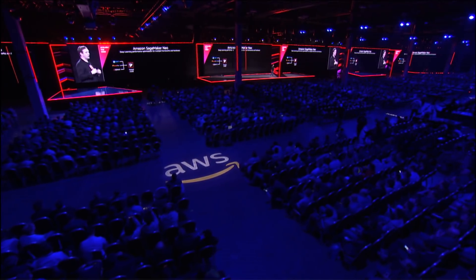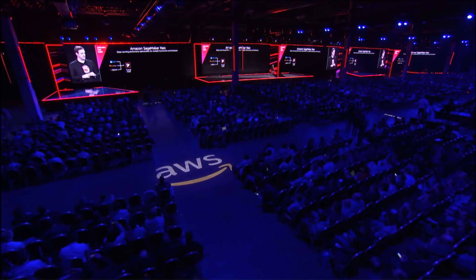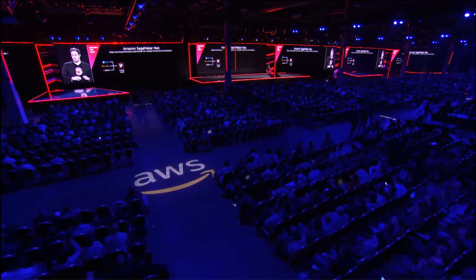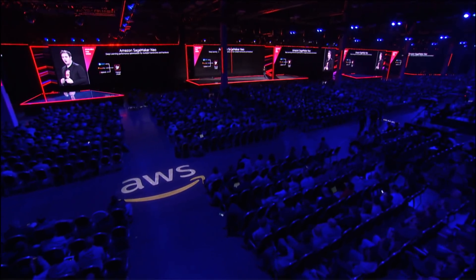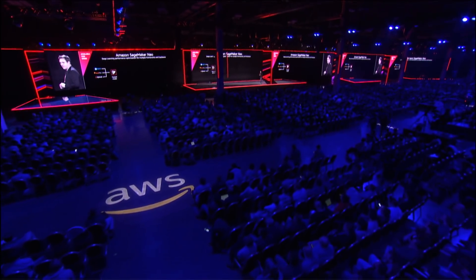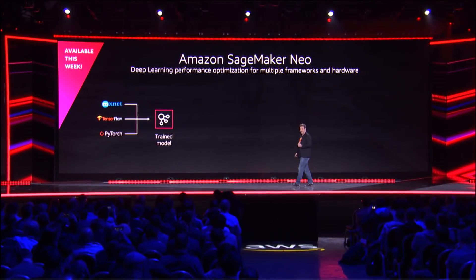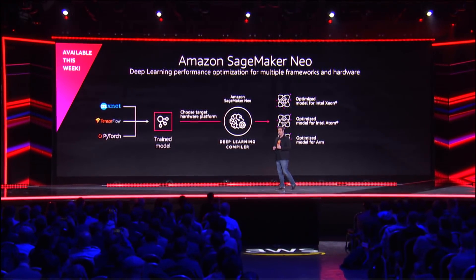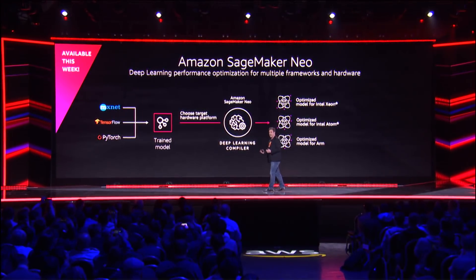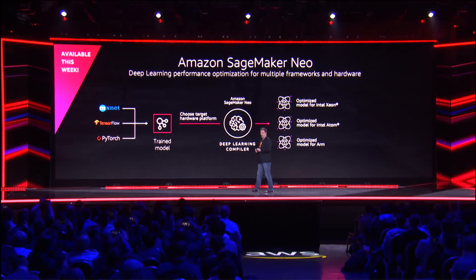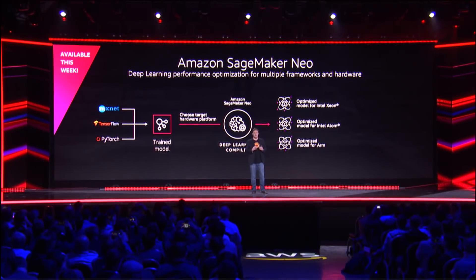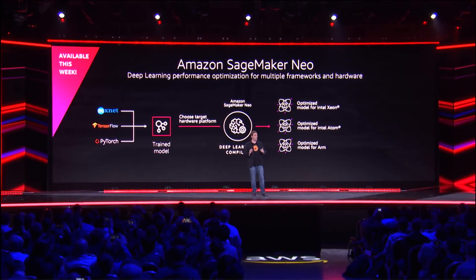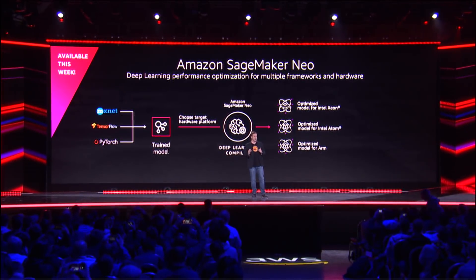Let's take a look at how this works. Using SageMaker Neo, which is a fully managed environment inside SageMaker, you train your model as you would normally, then you pass it into our new Neo deep learning compiler, and you select your deployment target — the hardware-specific target.